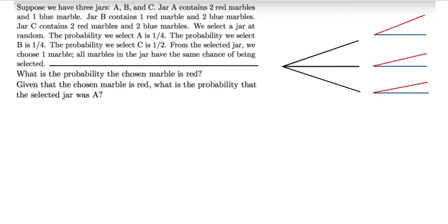Suppose we have three jars: A, B, and C. Jar A contains two red marbles and one blue marble. Jar B contains one red marble and two blue marbles. Jar C contains two red marbles and two blue marbles.